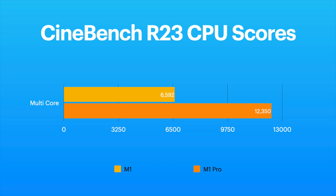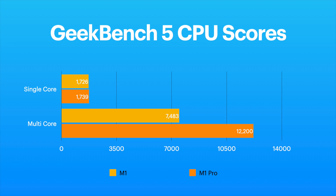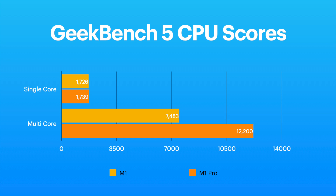Now let's check performance on some synthetic benchmarks. For Cinebench multi-core, the M1 scores 6,592 whereas the M1 Pro scores 12,350 — almost twice the performance. Looking at Geekbench, single-core speeds are nearly the same: 726 for M1 and 739 for M1 Pro. For multi-core, the M1 scores around 7,483 whereas the M1 Pro scores around 12,000, a big difference due to the greater number of performance cores.